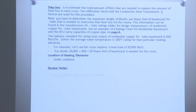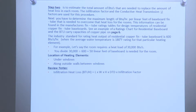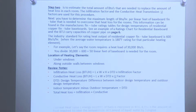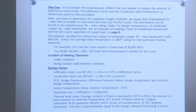Location of heating elements: under windows, along outside walls, between windows. Infiltration heat loss BTU equals L times W times H times DDT times the infiltration factor. Conductive heat loss BTU equals L times W times DDT times the U-factor. DDT is the design temperature difference between indoor and outdoor design temperatures. Total heat loss equals infiltration plus conductive. A BTU is the amount of heat required to raise the temperature of one pound of liquid water by one degree Fahrenheit at its maximum density, which occurs at 39.1 degrees Fahrenheit.